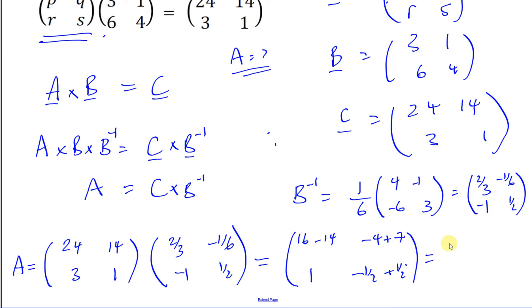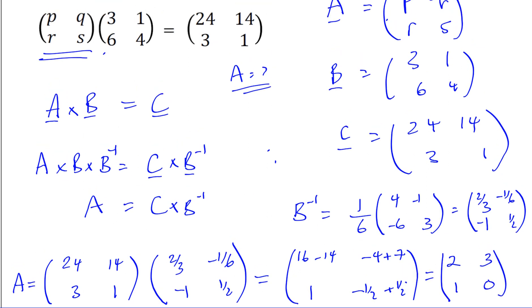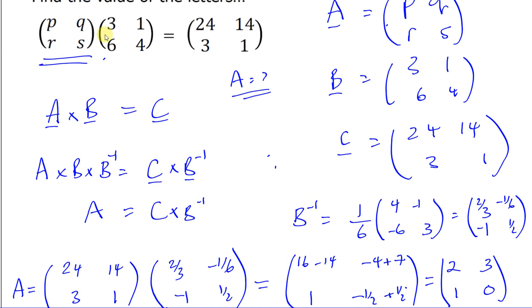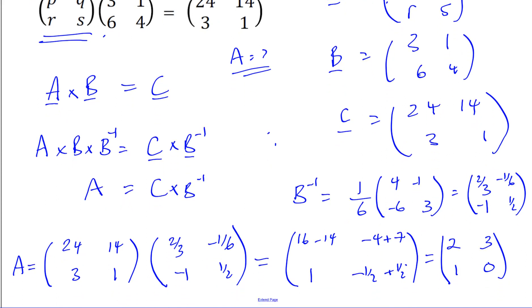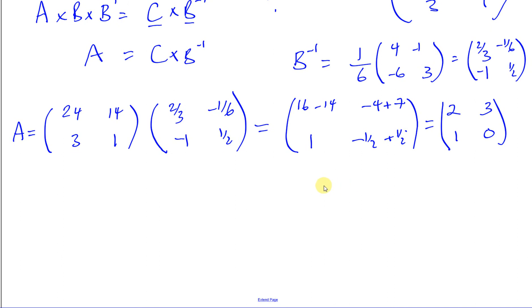So our answer matrix A is: 2, 3, 1, 0. That means P equals 2, Q equals 3, R equals 1, and S equals 0.